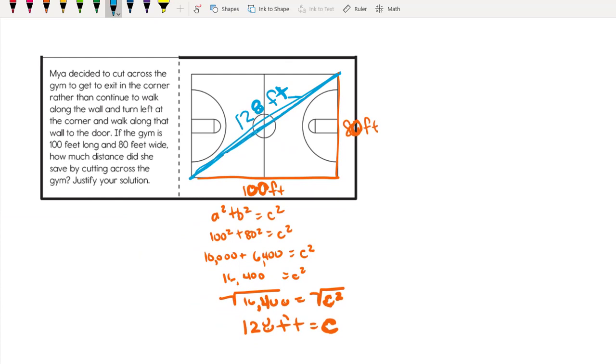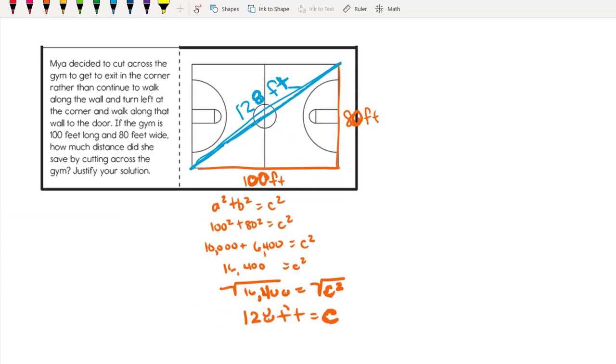However, that's not answering the question in its entirety. The last part asks how much distance did she save by cutting across the gym. How much would she have walked along the walls? That's 180 feet if she walked around beside the walls. But she didn't, she cut across from corner to corner. So we subtract the 128 that she actually walked, and we find out she saved herself 52 feet by cutting across the gym.